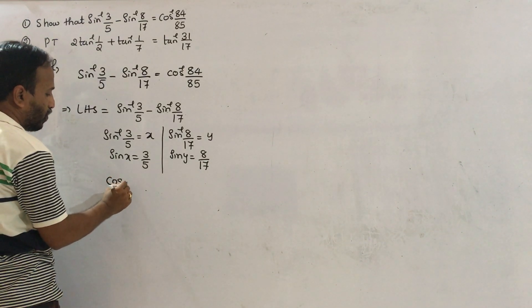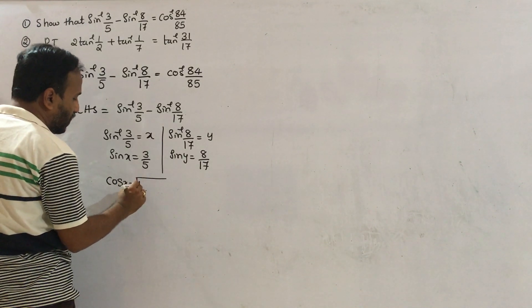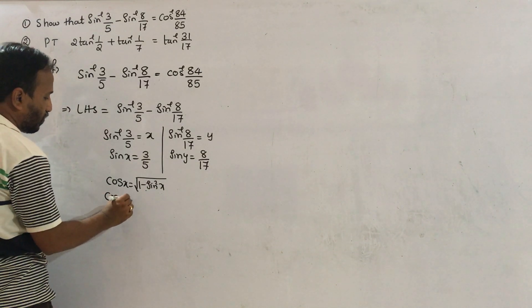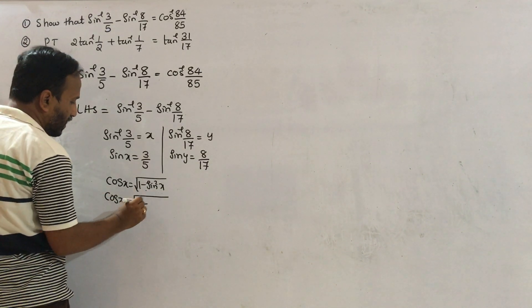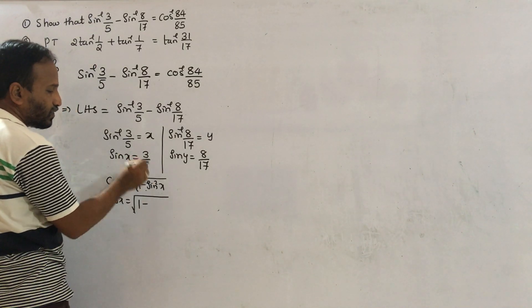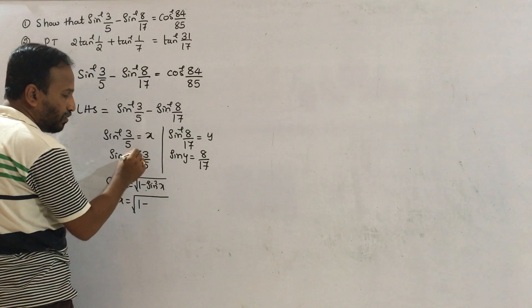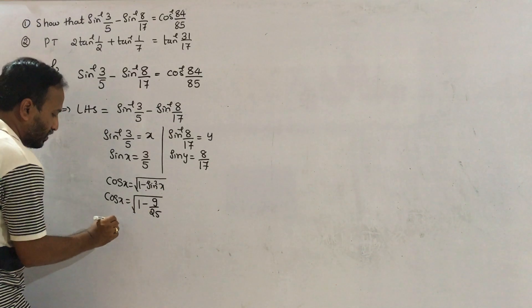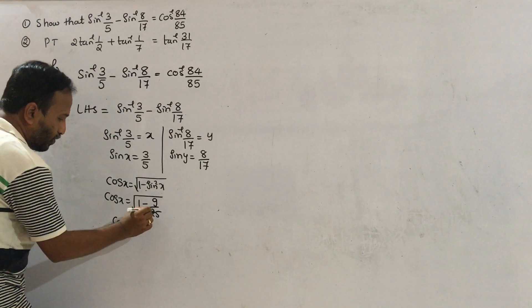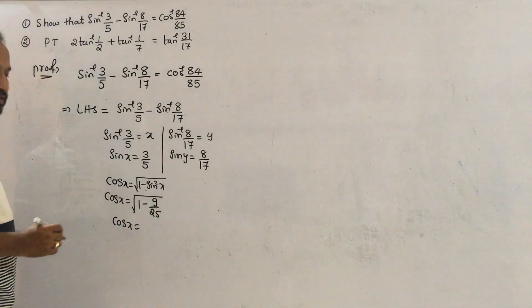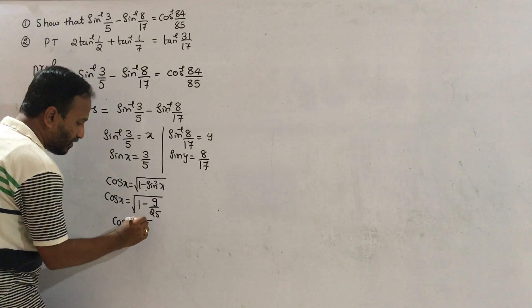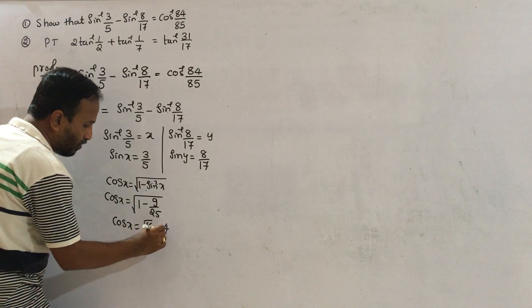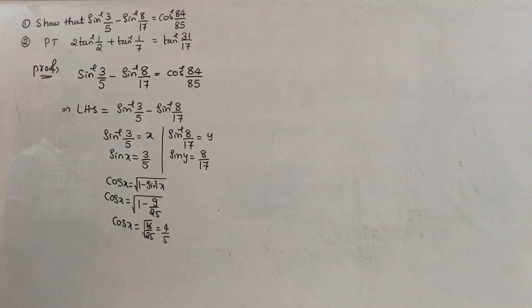Now, cos x equals root of 1 minus sin squared x, where sin x equals 3 by 5. So sin squared x equals 9 by 25. Therefore cos x equals 4 by 5.